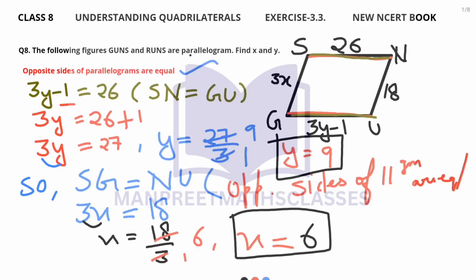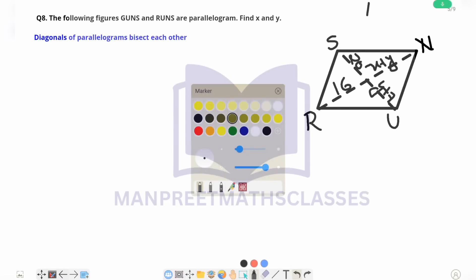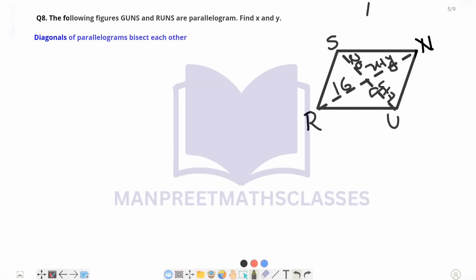Now let's solve the second part. Here is the second parallelogram RUNS. We are going to use a different property because the variables X and Y are given on the diagonals, so we will use the property related to diagonals. The property is: diagonals of a parallelogram bisect each other — meaning the diagonals cut each other into equal halves.